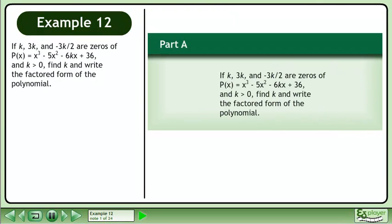If k, 3k, and negative 3k over 2 are zeros of P(x) = x³ - 5x² - 6kx + 36, and k is greater than zero, find k and write the factored form of the polynomial.